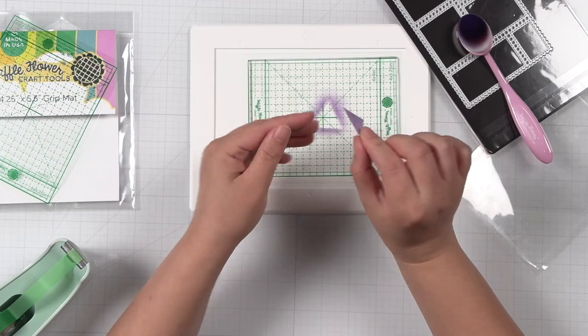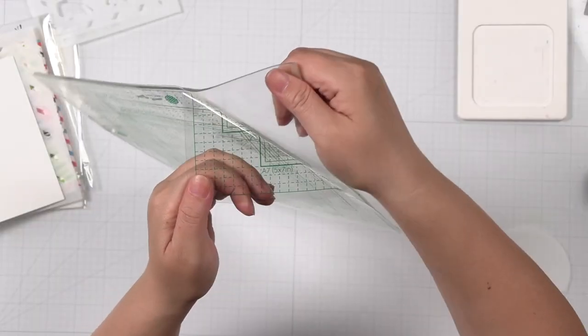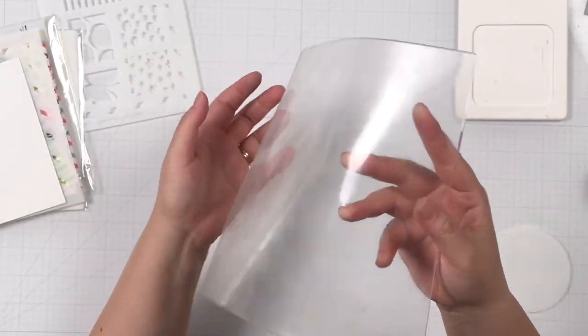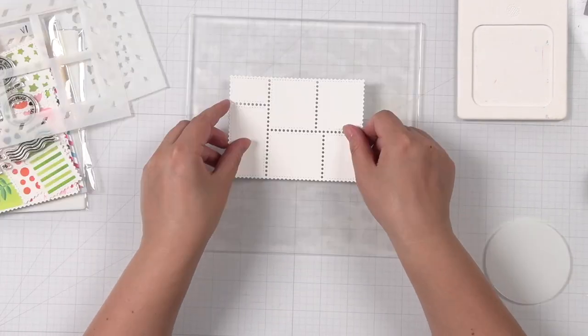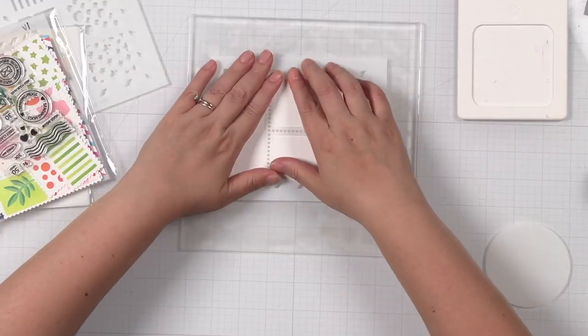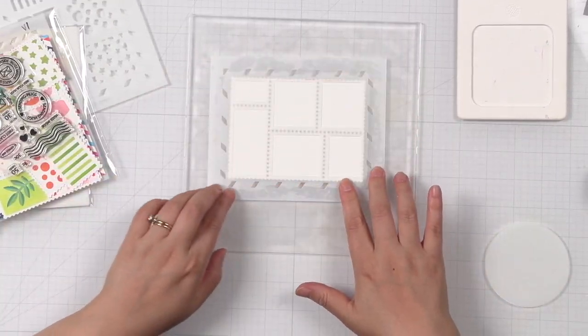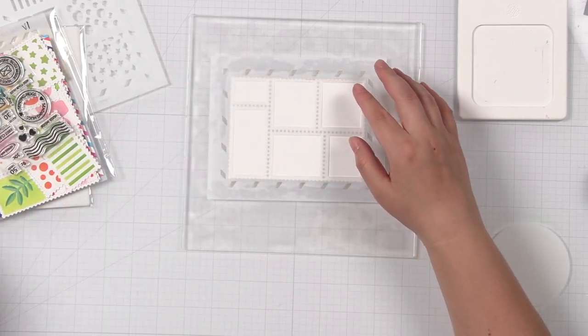Made from high quality photopolymer, this mat takes advantage of the natural stickiness of the material to grip papers and stencils without any adhesive or glues. You can use this mat over and over again.